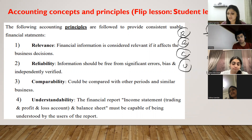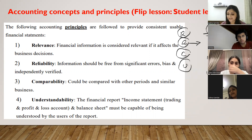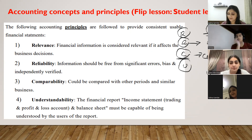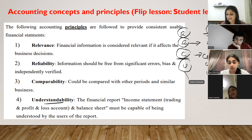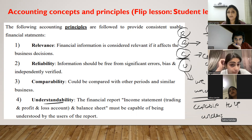When is it relevant? When it will help me to make decisions. When is it reliable? When it is free from errors. When is it comparable? When you can compare from one period to another. When is it understandable? When it is capable to be understood. Now write the four accounting principles and their meanings in one line in your own words.